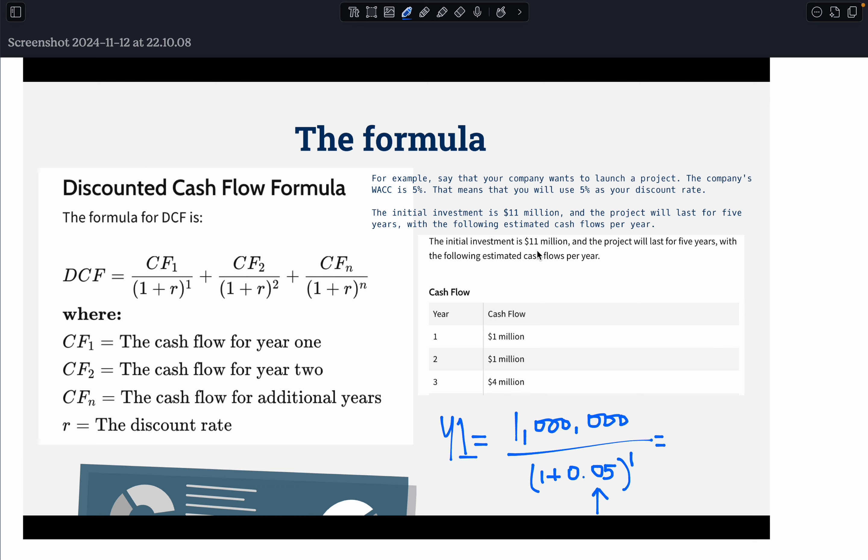So this is what you will do. The initial investment is £11 million and the project will last for five years. Initial investment is £11 million with the following estimated cash inflows, cash flows per year. So you've got year one, year two, year three. So I've only got three years because I'm only going to show you one year because the calculation is a bit too complex and too long for me to do. But the idea is you use this formula for the discounted cash flow calculation. This is the third method that you need to know for your investment appraisal chapter.